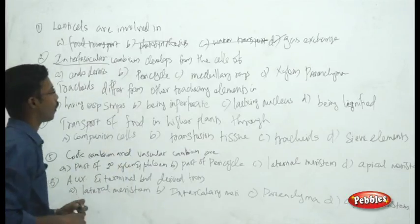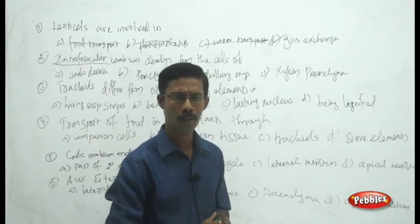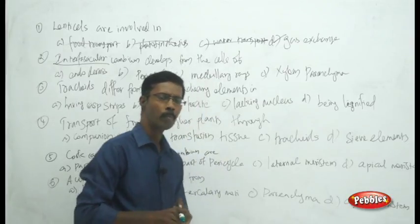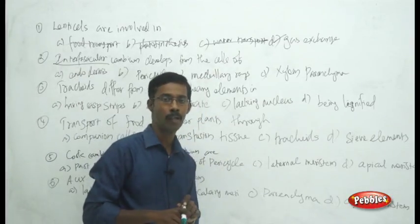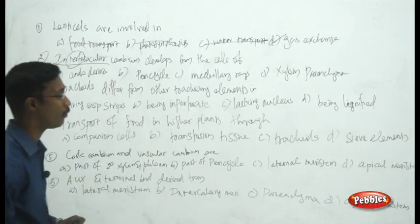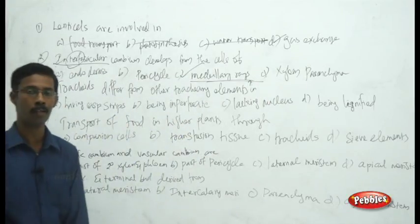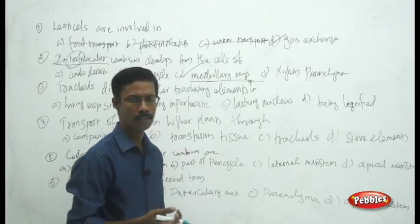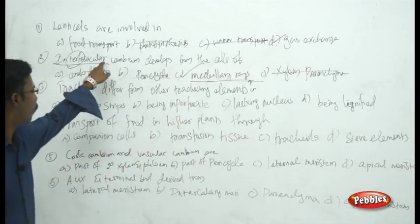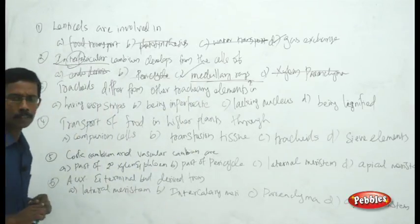Next question: the interfascicular cambium develops from the cells of which structure? As discussed in secondary growth, interfascicular cambium participates in forming secondary xylem and phloem. It develops from the medullary rays, which later produce secondary medullary rays along with the interfascicular cambium. You can eliminate xylem, pericycle, and endodermis. The answer is medullary rays.